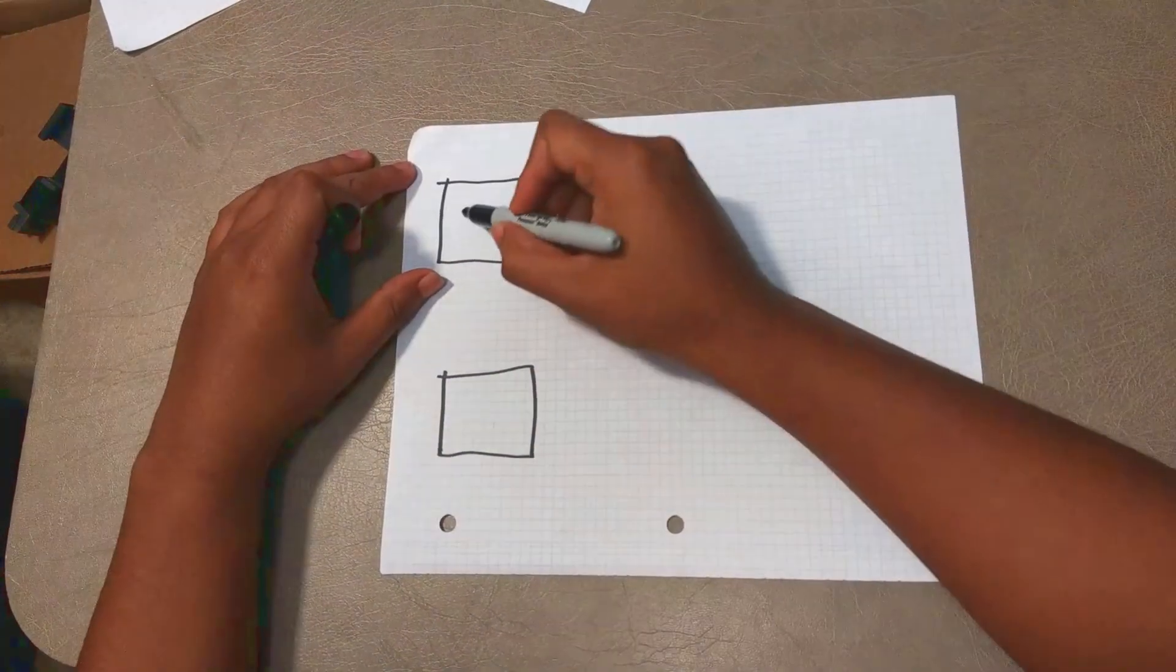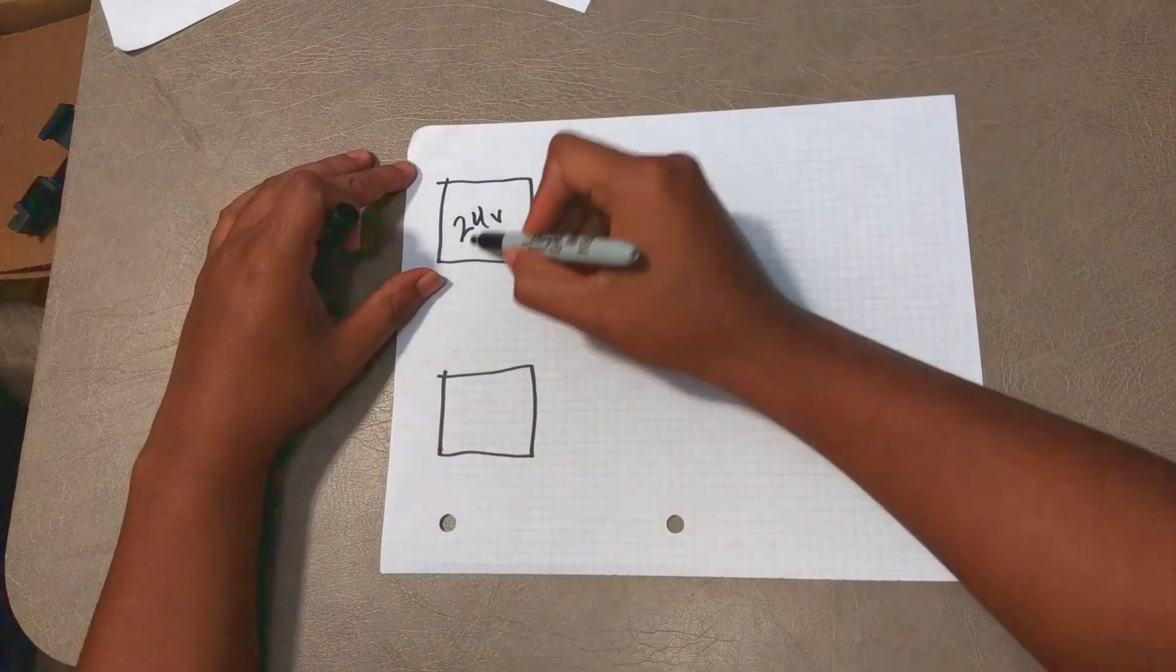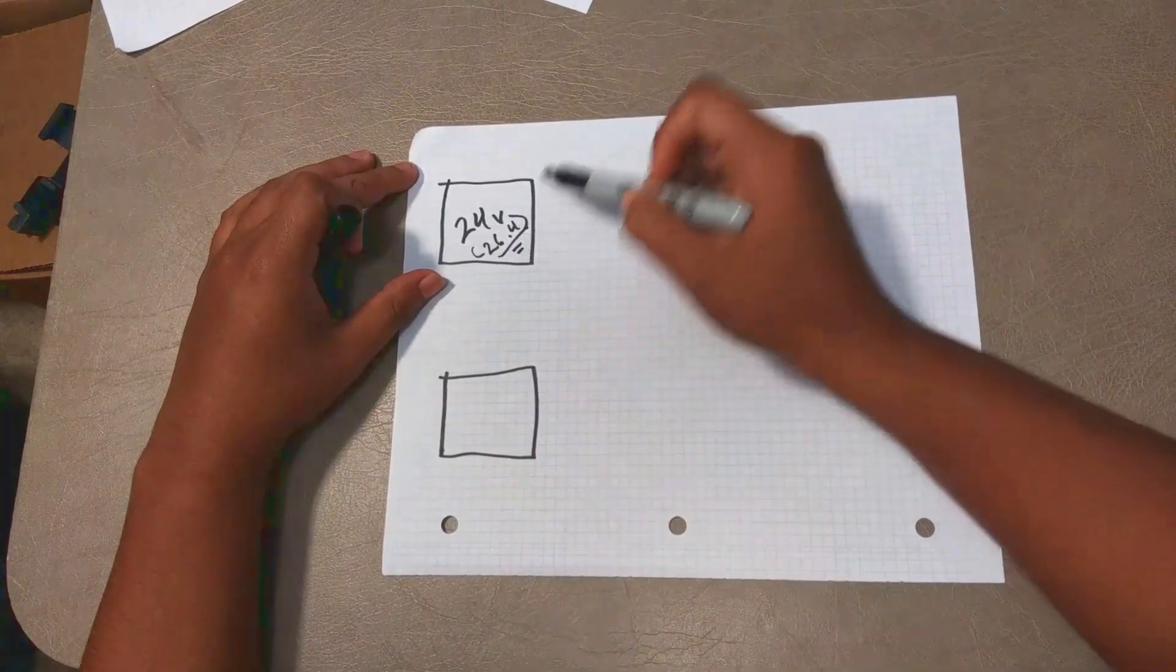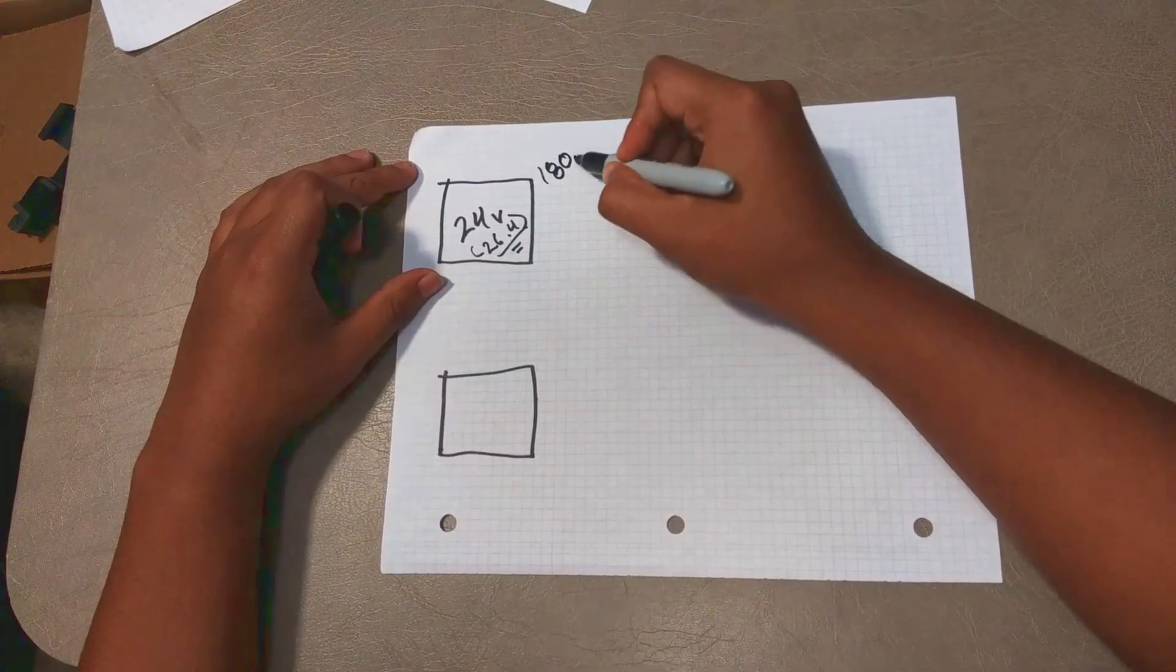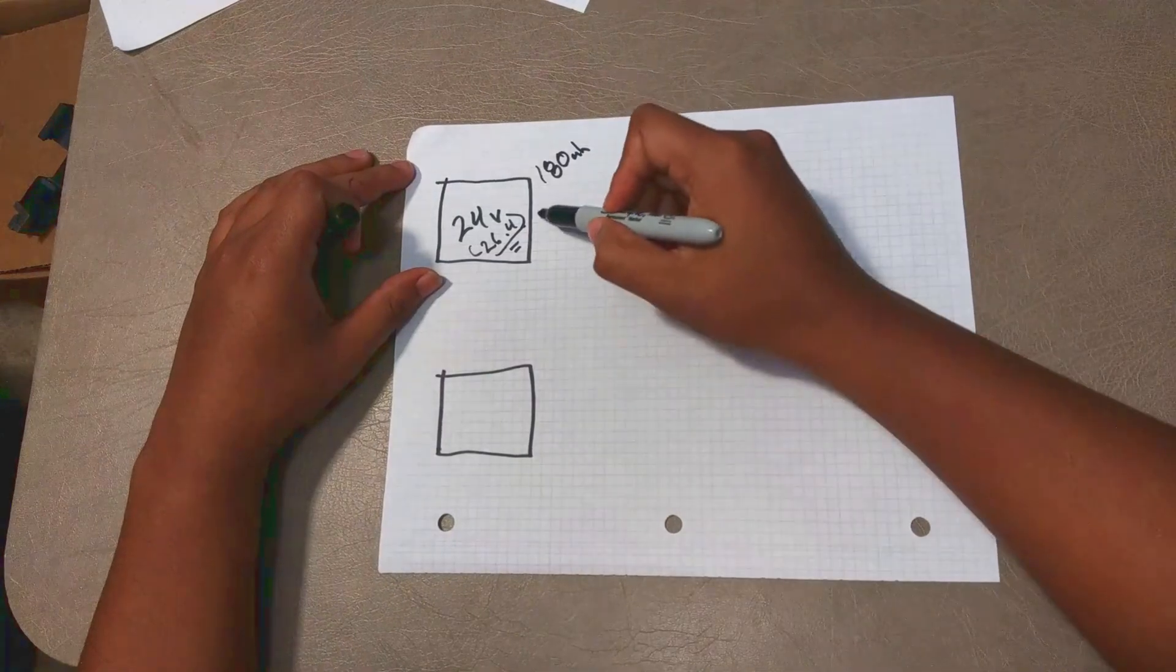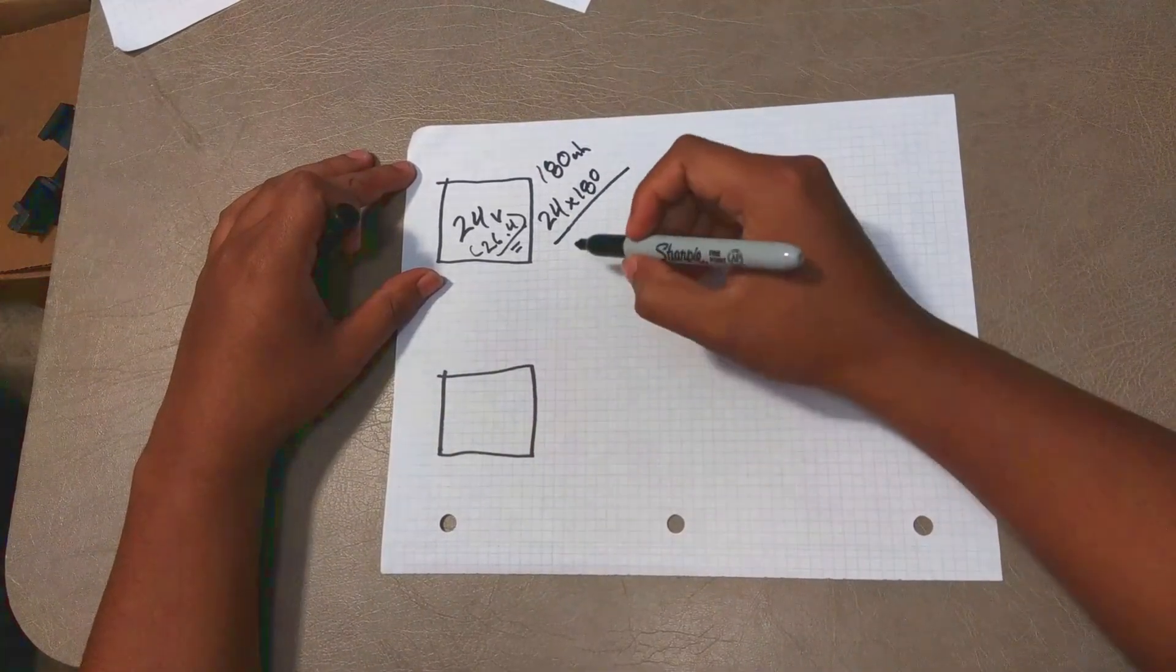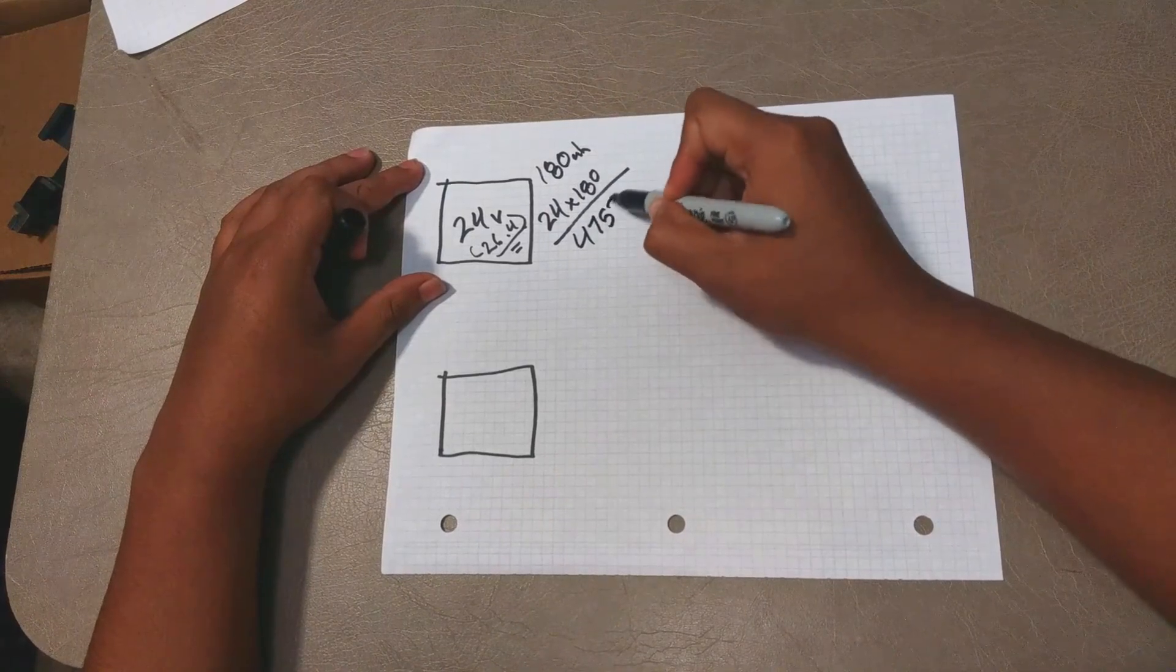So in our case we have a 24 volt system with a nominal voltage of 26.4 which is the actual usable energy inside this battery and it has 180 amp hours. So once you have these two pieces of information you can multiply your voltage by your amp hours and it'll give you the total amount of watts inside this battery. So in our case the total amount of watts is 4752.